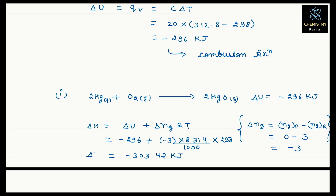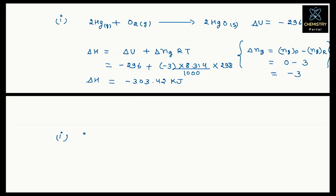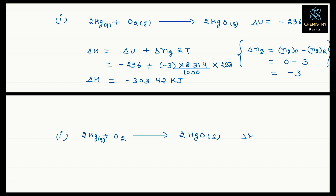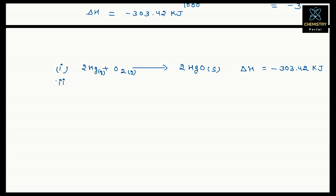The enthalpy of formation means one mole of a substance is formed from its standard state. The standard state of mercury is liquid. So we already have the first reaction with ΔH = −303.42 kilojoule. The second reaction involves formation of mercury gas from mercury liquid, and the standard state of mercury is liquid.